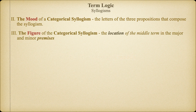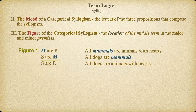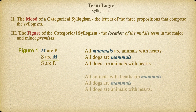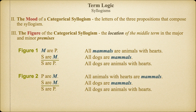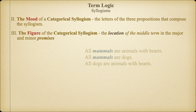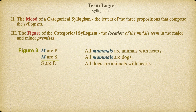We use the word figure to refer to the orientation of the middle term in the major and minor premises of a categorical syllogism. Since each categorical proposition has two terms — a subject and a predicate term — and since there are two premises for each categorical syllogism, there are four possible orientations of the middle term. We label a categorical syllogism as being in Figure 1 if the middle term is in the subject position of the major premise and the predicate position of the minor premise, as we see in this argument. We label a categorical syllogism Figure 2 if the middle term is in the predicate position of both premises, as we see in this second syllogism.